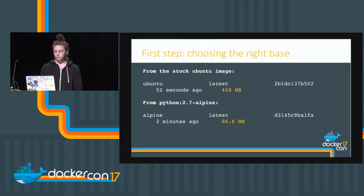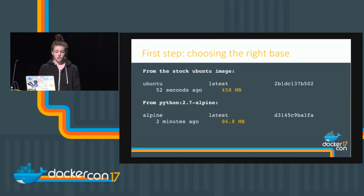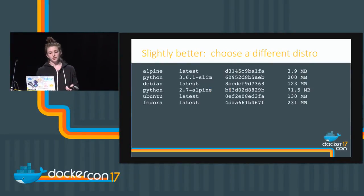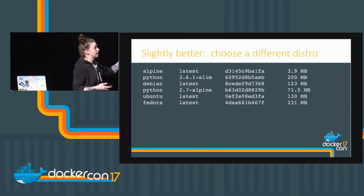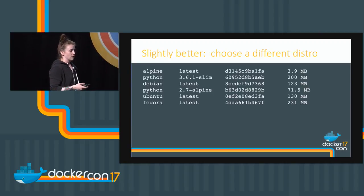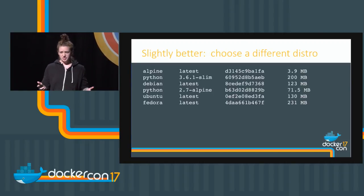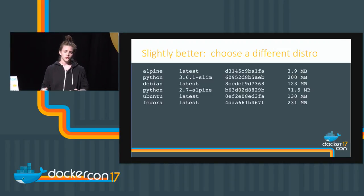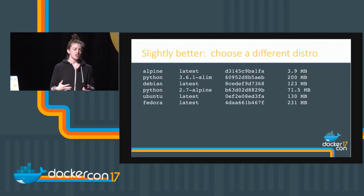We have tons of examples. We'll talk about trade-offs for when you maybe don't want one of the really minimal base images — there are times for that too. So we have Alpine latest coming in at a tiny 3.9 megs, some Python examples, a couple of different Linux distros. Use the tool that's right for you, the distro that's right for you, the base that's right for you — but don't pick something bigger than it needs to be just because it's easy to pull from Docker Hub.